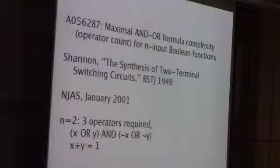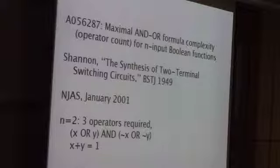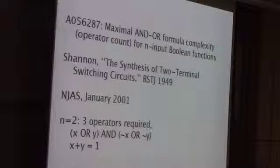As I remember it, Neil posted this question to seq-fans around New Year's 2001. He had computed the first two terms by hand and asked if anyone could compute a few more. For n equals 2, it's the second term, the worst function f is the parity function, the XOR function, x plus y equals 1. And you can realize that with three operators as x OR y AND NOT x OR NOT y. When I read Neil's mail, I thought I can probably do an exhaustive search to get the next few terms. And so I did.